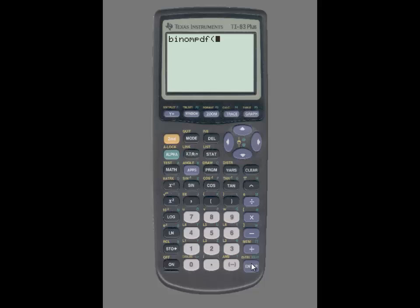So once again, n was 8. The comma button is located above the number 7. P was 0.60, enter another comma, and then enter in x, which is 3. With the binomial PDF information on the home screen, you're then going to press enter to determine the probability.